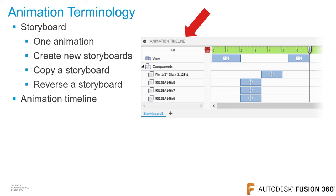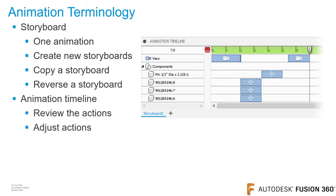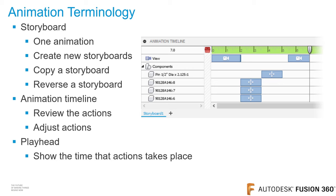The section at the bottom of the canvas is called the animation timeline. Here you can review and also modify the actions. In the animation timeline, the downward pointing arrow is referred to as the playhead. The playhead shows the time that an action takes place. You can also move the playhead to set when an action stops.